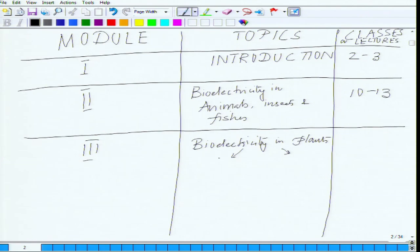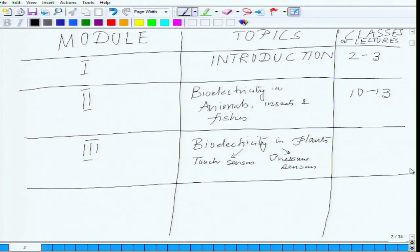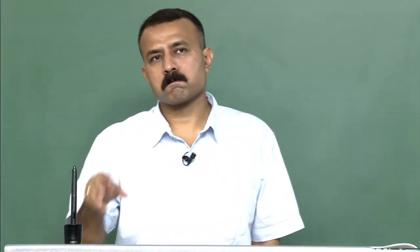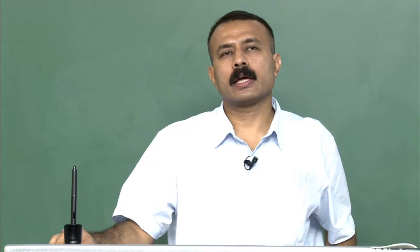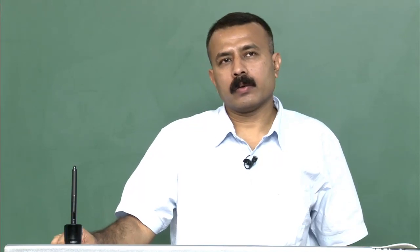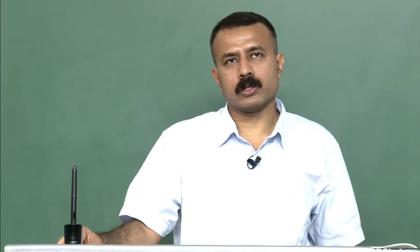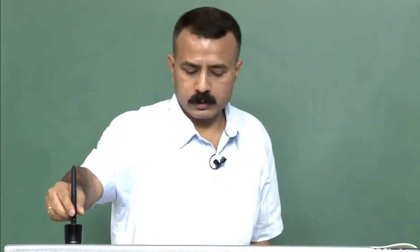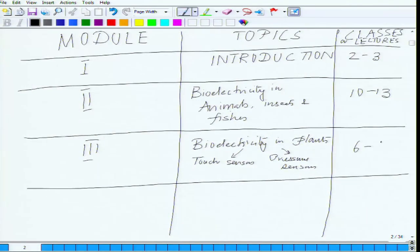From there we will move on to bioelectricity in plants. Here we will talk about touch sensors or pressure sensors — especially in plants like mimosa pudica, the touch-me-not — and insectivorous plants that trap insects. We will also introduce the whole photosynthetic machinery: how photosynthesis takes place and how the electrical events within the plant lead to the generation of energy. Around 6 to 10 lectures will be devoted to this.